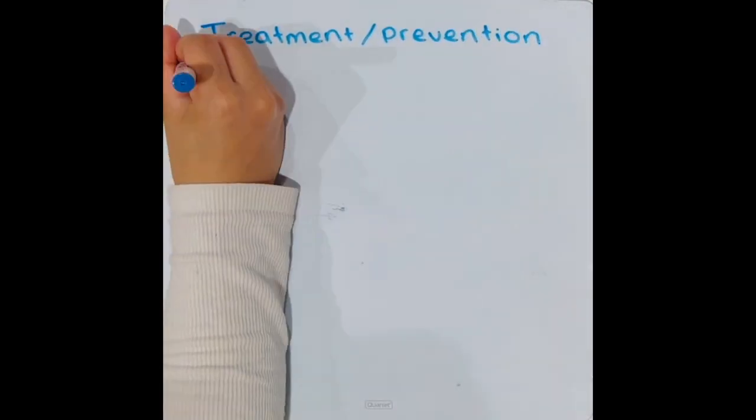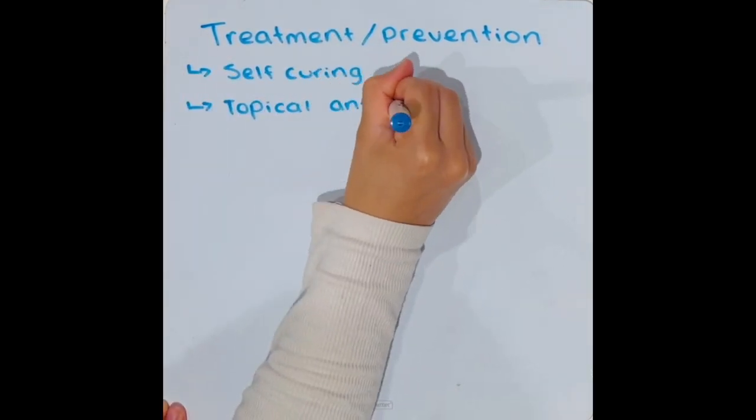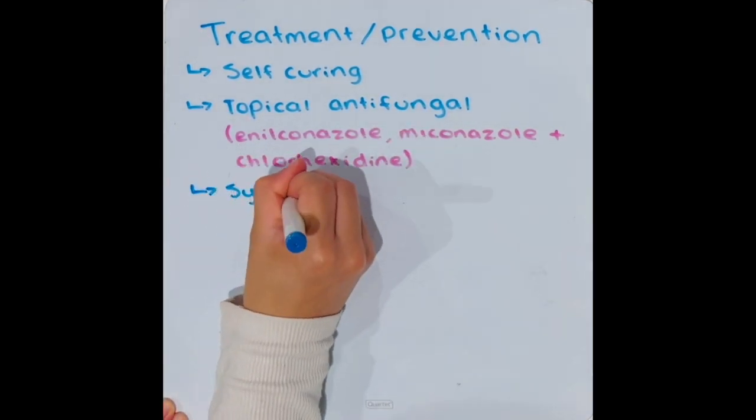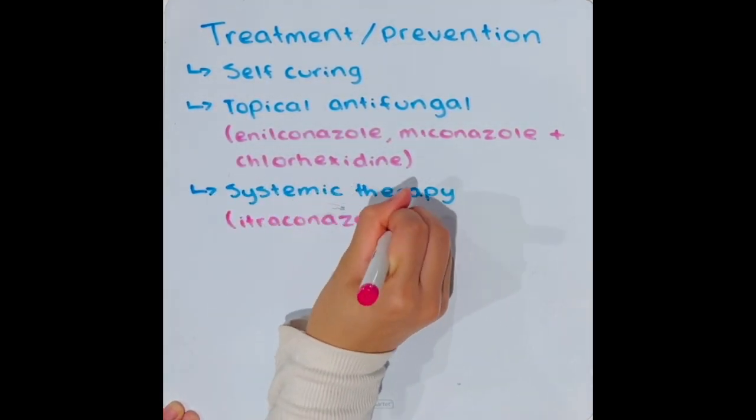Dermatophytosis is generally a self-curing disease and requires no treatment in healthy animals. However, prevention methods include topical antifungal therapy, such as shampoo, itraconazole in cats and dogs, and environmental decontamination.